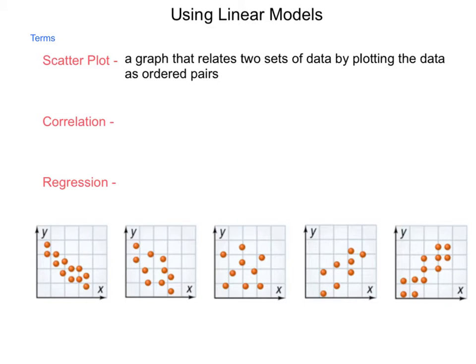Next, we have correlation, which is the strength of the relationship between data sets. You can see at the bottom, we have several different graphs that show different amounts of correlation. And we're going to be working with each of these.